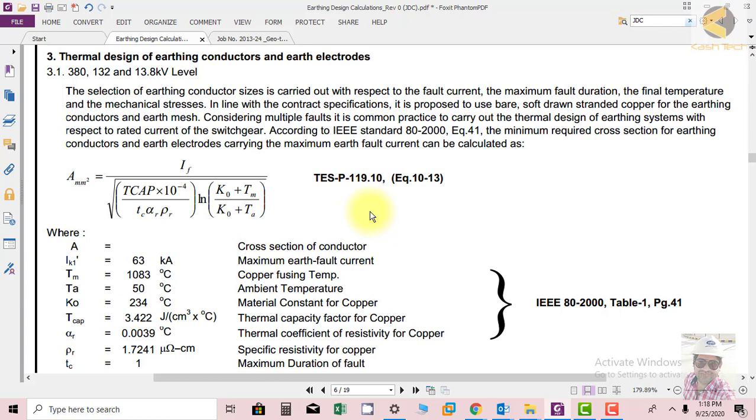rated current of switchgear. This is the practice we are following here: carrying out thermal design with respect to rated current of switchgear. According to IEEE standard AT 2000 equation 41, the minimum required cross section for earthing conductor